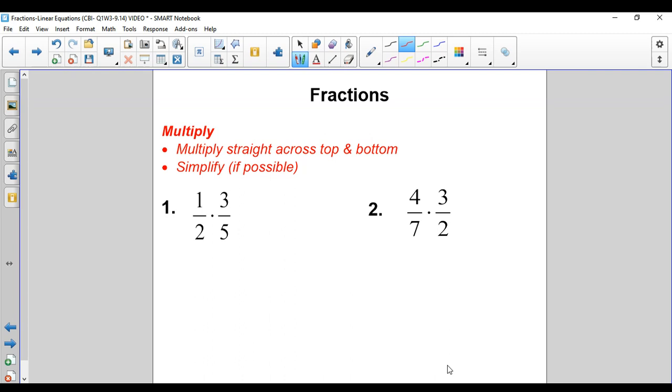So multiplying, you don't need to do anything beforehand. Nothing needs to be the same. You just go ahead and multiply across the top, across the bottom. One times three is three, two times five is ten. Let's see what else you can do. Well, that's it. Can't do anything else. There's your answer.